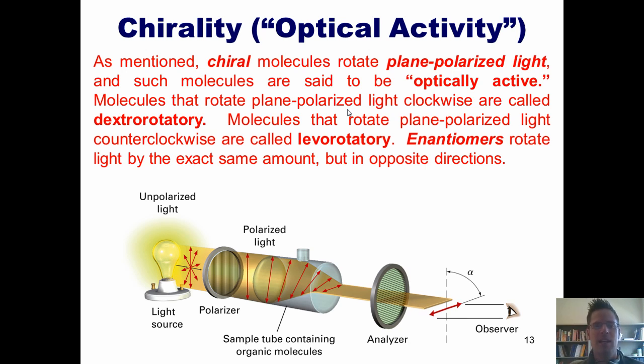One thing that you need to understand is that enantiomers of each other rotate light by the exact same amount but in opposite directions. So if I had one enantiomer pure in a container put into a polarimeter and it rotated the light clockwise,